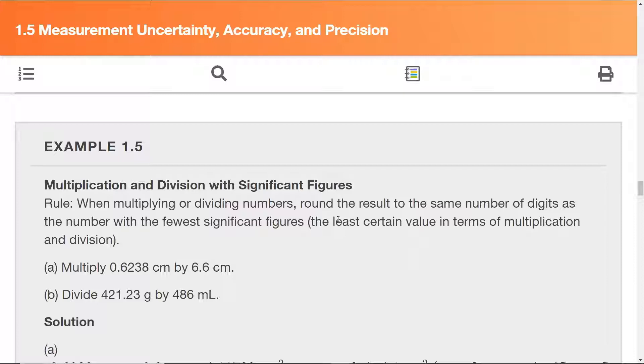When multiplying and dividing, the rule is you round the answer to the same number of digits as the number with the fewest significant figures. Adding and subtracting, it's the fewest number of decimal places. Multiplying and dividing, it's the fewest significant figures.